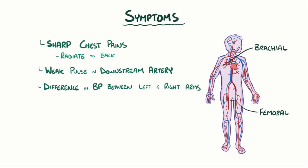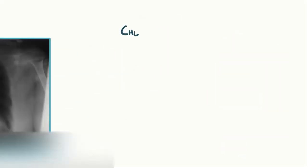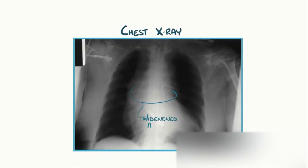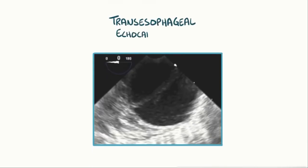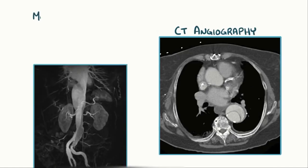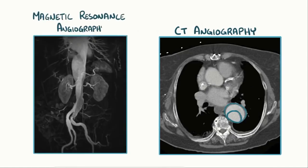An aortic dissection is an emergency because it can lead to hypotension, or low blood pressure, as well as shock if there's rupture and significant blood loss. On a chest x-ray, there's typically a widened aorta. More sensitive imaging techniques that are commonly used include a transesophageal echocardiogram, where an ultrasound probe is passed through the esophagus to get a clear picture of the aorta, as well as CT angiogram and magnetic resonance angiogram, both of which look closely at the blood vessels.